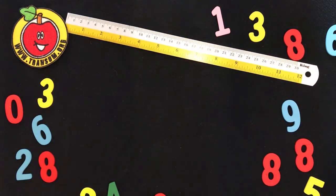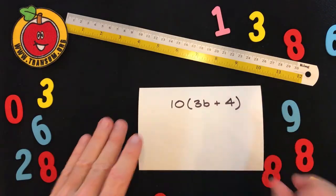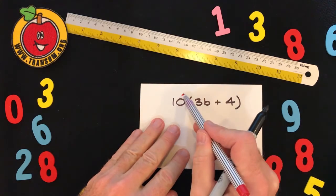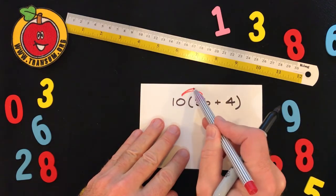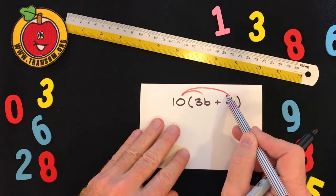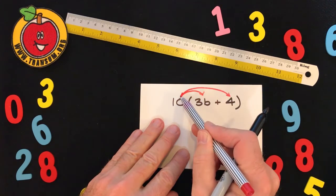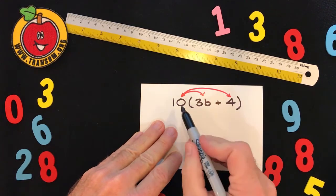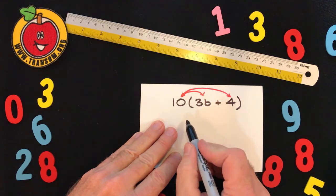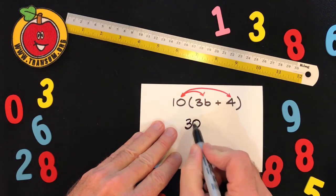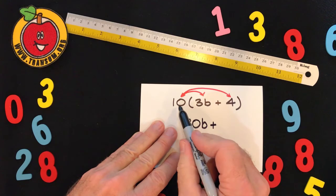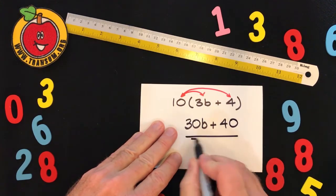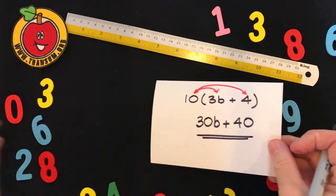Now another example. This time we have ten outside the brackets and inside we have two terms, 3b and a four. So again I'll draw the little arrows pointing to the terms that must be multiplied together, everything multiplied by the ten. So first of all, 3b times ten is 30b, plus the four times the ten which is 40. So that's the answer that you would type in for that particular question.